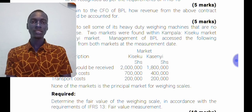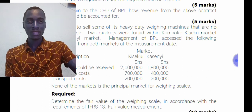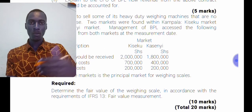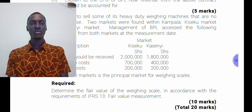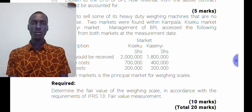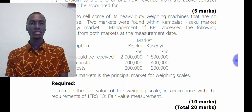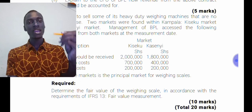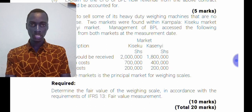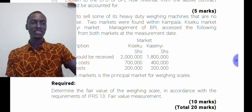IFRS 13 sets out the concepts of the principal market and the most advantageous market. When answering, you need to define both. A principal market is the market with the greatest volume and level of activity for the asset. The most advantageous market is the market that maximizes the amount that would be received to sell the asset after taking into account both transaction costs and transport costs.